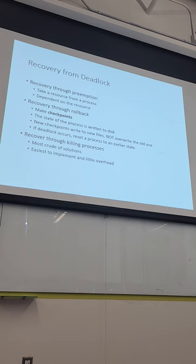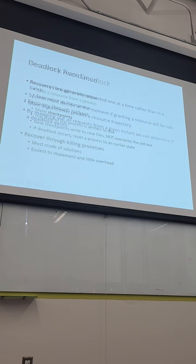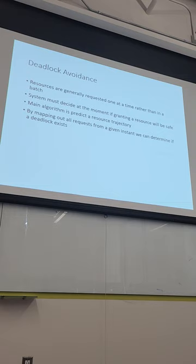In databases, rollback works via transactions: begin transaction, do work, commit when done. Until commit, all checkpoints are saved so you can roll back. Once in a good state, you commit and checkpoints are discarded. That's allowing deadlock to happen then fixing it. Alternatively, use deadlock avoidance: as soon as resources are requested, the system decides whether to grant the request based on whether it could lead to deadlock.